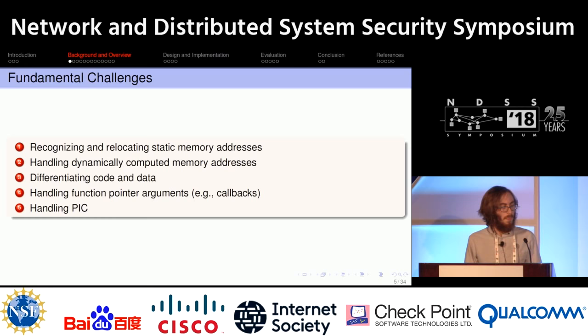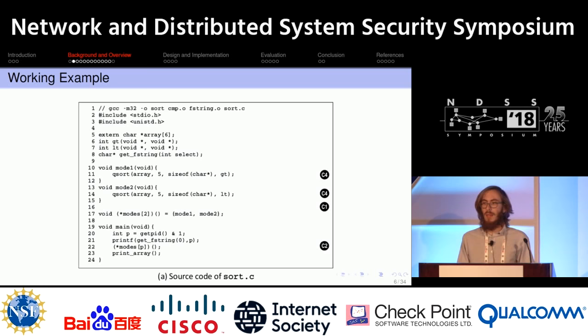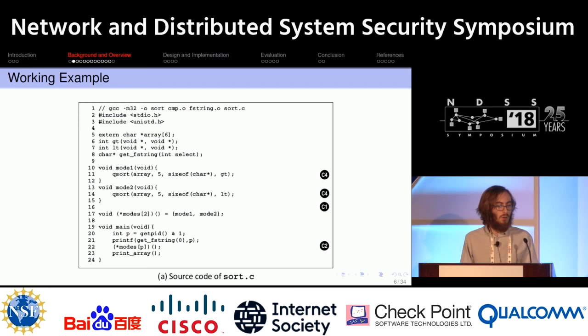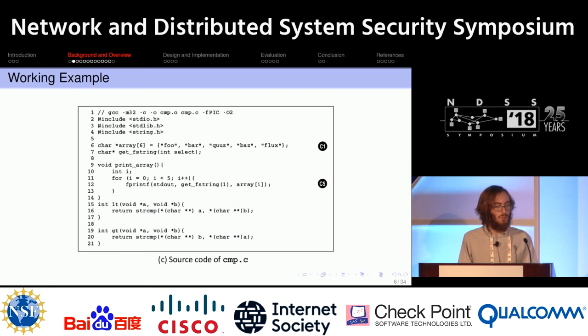To discuss this problem, I'm going to introduce a simple working example that shows a lot of the challenges you encounter when rewriting a binary. This example prints an array in ascending or descending order depending on whether the process ID is even or odd — something that is not statically determinable. There's also some handwritten assembly with inline data, and some comparison functions, LT and GT, used for the sorting.